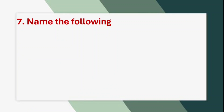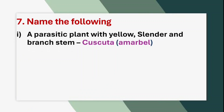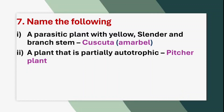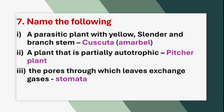Seventh question — Name the following. (A) A parasitic plant with yellow, slender and branched stem. Answer: Cuscuta, that is Amarbel. (B) A plant that is partially autotrophic. Answer: Pitcher plant. (C) The pores through which leaves exchange gases. Answer: Stomata.